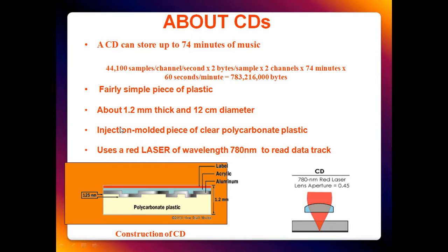A CD is around 1.2 millimeter thick and 12 centimeter in diameter. It is an injection molded piece of clear polycarbonate plastic, and it uses a red laser of wavelength around 780 nanometers to read the data track. The construction consists of a label, acrylic, aluminum layer, and crests and troughs of around 125 nanometers, with a polycarbonate plastic base.